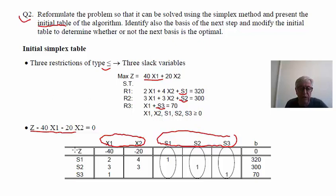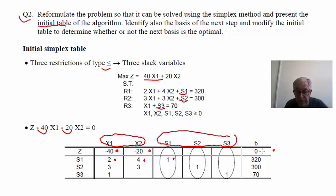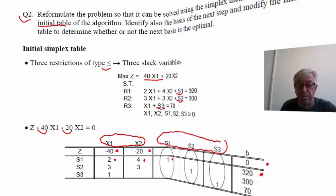We introduce the coefficients, starting with the Z row: −40 for X1 and −20 for X2, and zero for the remaining terms. For the first restriction row: 2 for X1, 4 for X2, and 1 for S1, with right-hand side 300. We continue filling in the rest of the table in the same way. This completes the first part of the question.